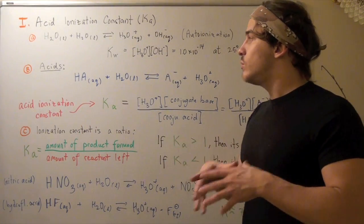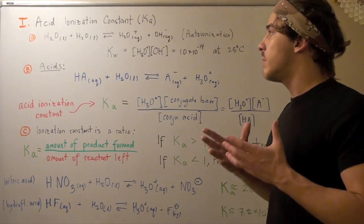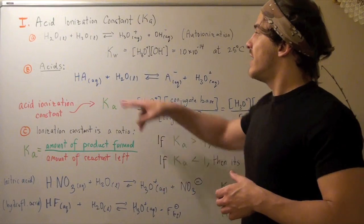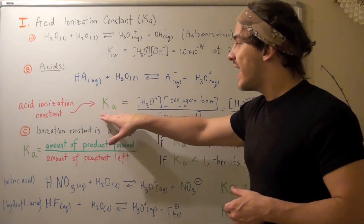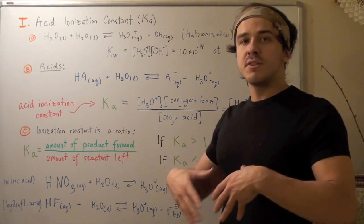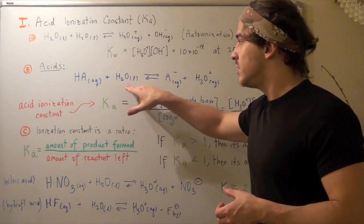Now, in the same way that we talk about ionization constants of water, we can also talk about ionization constants of acids, except now they're not Kw, they're Ka, where A is for our acid. So let's suppose we have a hypothetical acid, HA, reacting with a water molecule in a liquid state.